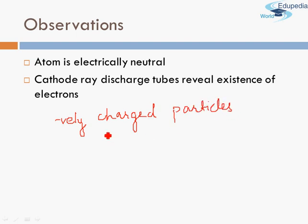Which means to have net charge of zero on an atom there must be some kind of positive charge also present which cancels out this negative charge. And based on this very conclusion he suggested an atomic model. So let's study that.